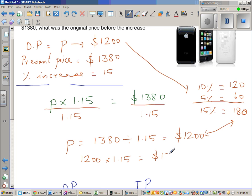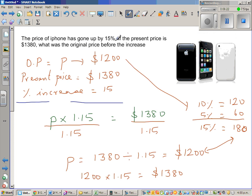So one of the common mistakes that students do is whenever they have an example like this, they try to take off 15% from this and they think that that is the original price. But try that - you take off 15% from this, you will not get $1,200.